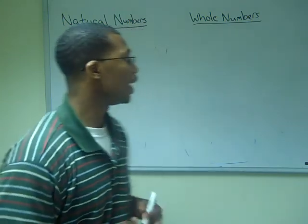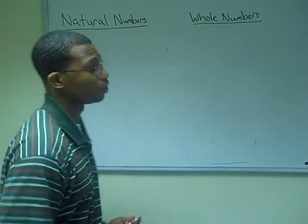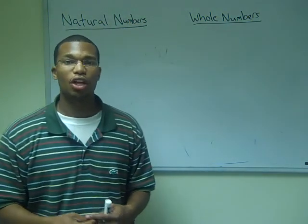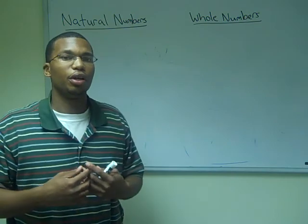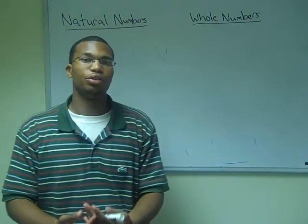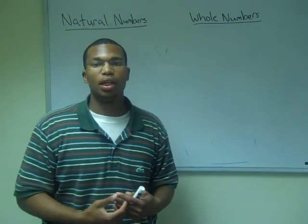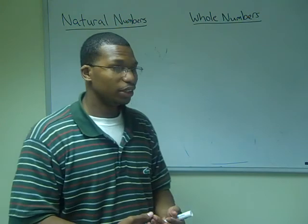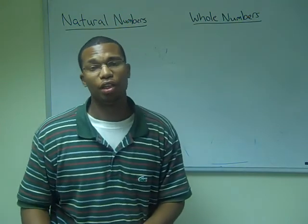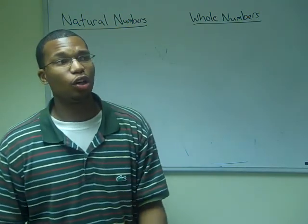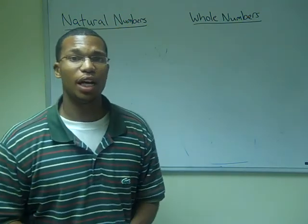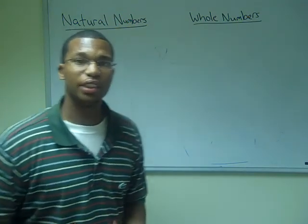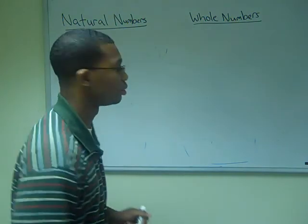The natural numbers are known as the counting numbers. Those are the numbers that we are first introduced to. Those numbers include one, two, three, four, five, all the way up until positive infinity. So let me write some examples of some natural numbers.